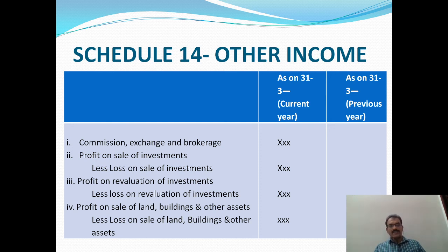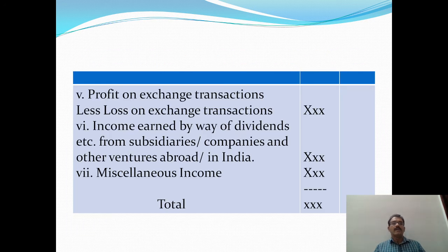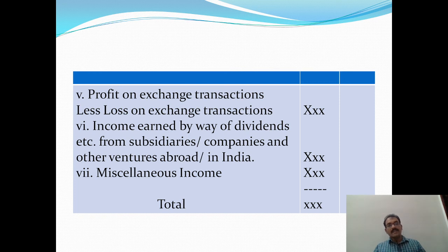The next item in Schedule 14 is Profit on Sale of Land, Buildings and Other Assets — from the profit, deduct Loss on Sale of Land, Buildings and Other Assets, and the balance is shown in the amount column. Next is Profit on Exchange Transactions, from which Loss on Exchange Transactions is deducted. Then Income earned by way of Dividends from subsidiaries, companies and other ventures, both abroad and in India.